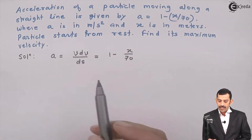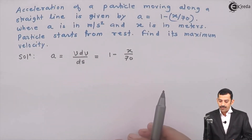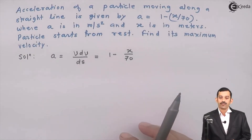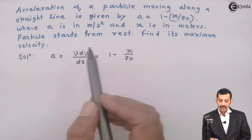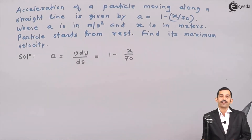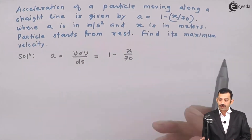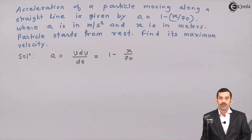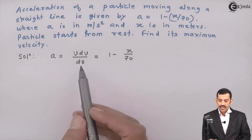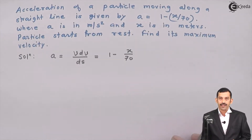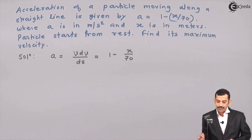Using this substitution, we will integrate this equation and find the equation of velocity in terms of position. The problem asks for maximum velocity, so from the known equation of acceleration we need the equation of velocity, which we find by substituting a = v·dv/ds and integrating.